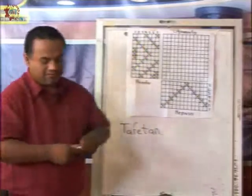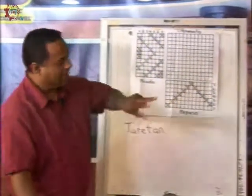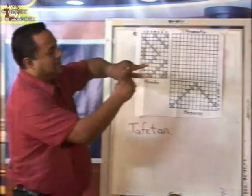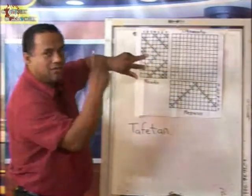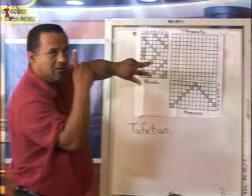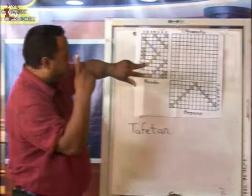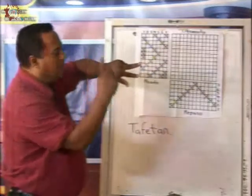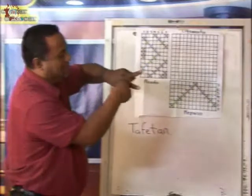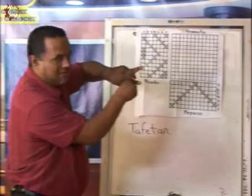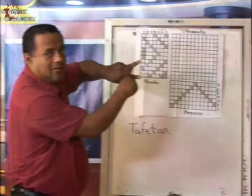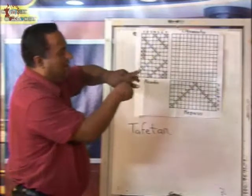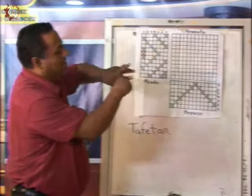Este ligamento — vamos a suponer que mis dedos son hilos en sentido horizontal, y mis dedos son hilos en sentido vertical. Entonces, ¿el tafetán cómo va a evolucionar? Este hilo va a pasar por encima de un hilo de trama — así se llaman los hilos que van en sentido horizontal. Va a pasar por encima de un hilo de trama, después el siguiente por abajo y el siguiente por encima.